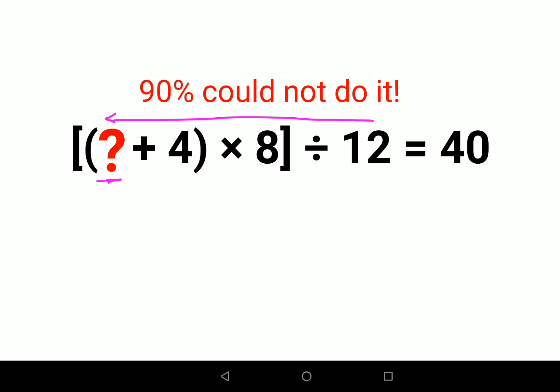Now what you should do in this case is since here we have division of 12, we will multiply by 12 on both sides. So what happens is now you are left with question mark plus 4 into 8. Then there is a bracket and next what we will get over here is 40 into 12 is 480.